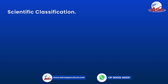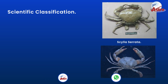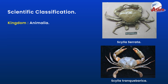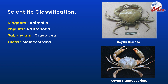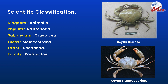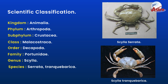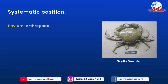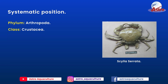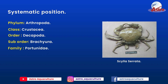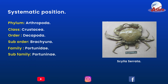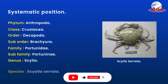Scientific Classification: Cilla sarata and Cilla tranqvabarica. Kingdom: Animalia; Phylum: Arthropoda; Subphylum: Crustacea; Class: Malacostraca; Order: Decapoda; Family: Portunidae; Genus: Cilla; Species: Sarata and Tranquebarica. Systematic Position — Phylum: Arthropoda; Class: Crustacea; Order: Decapoda; Suborder: Brachura; Family: Portunidae; Subfamily: Portunini; Genus: Silla.